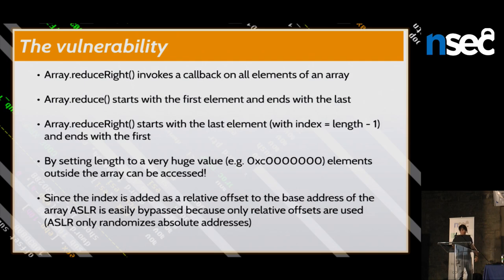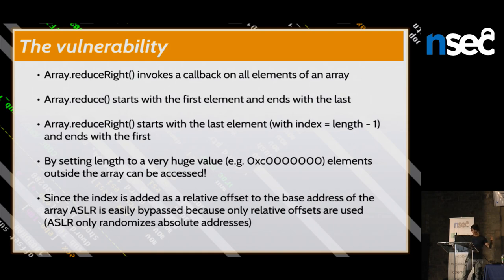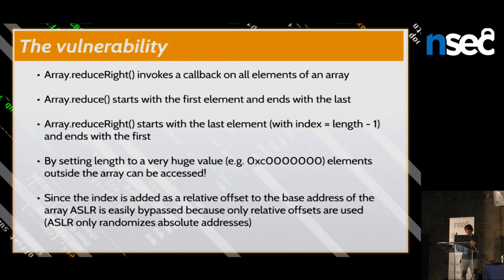To understand this vulnerability, we first need to discuss the reduceRight function. The array.reduceRight function invokes a callback function on all elements of an array — say the callback is a print function. It goes from right to left: starting at element at index length-minus-one, printing it, then length-minus-two, and so on until it reaches element at index zero.